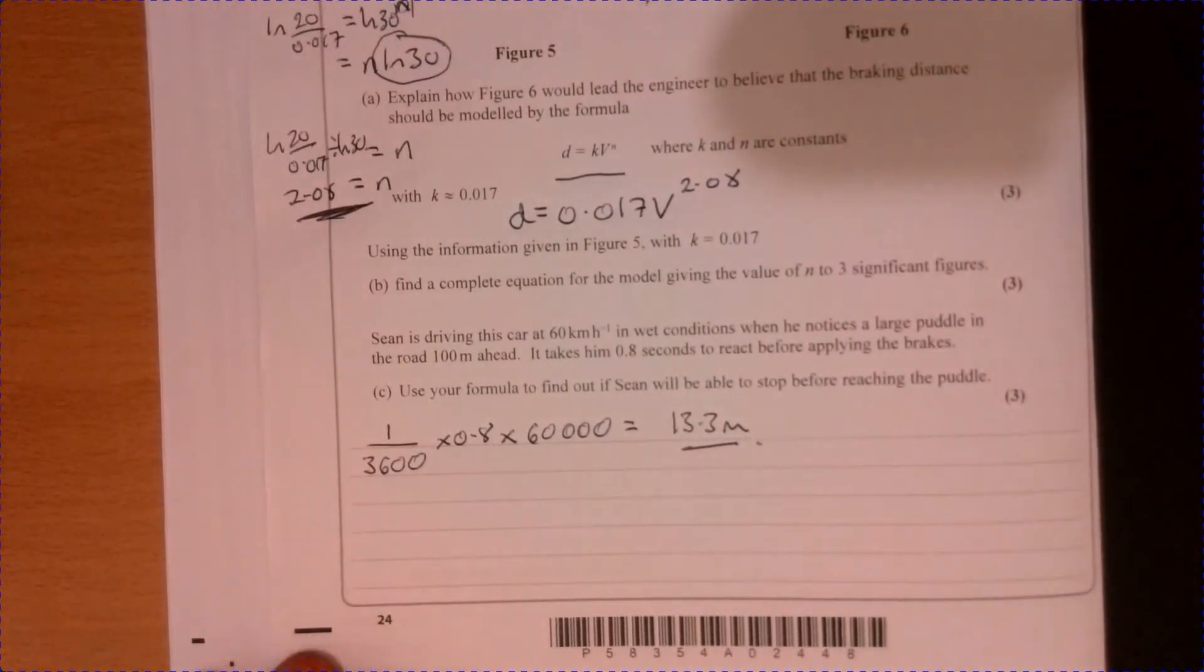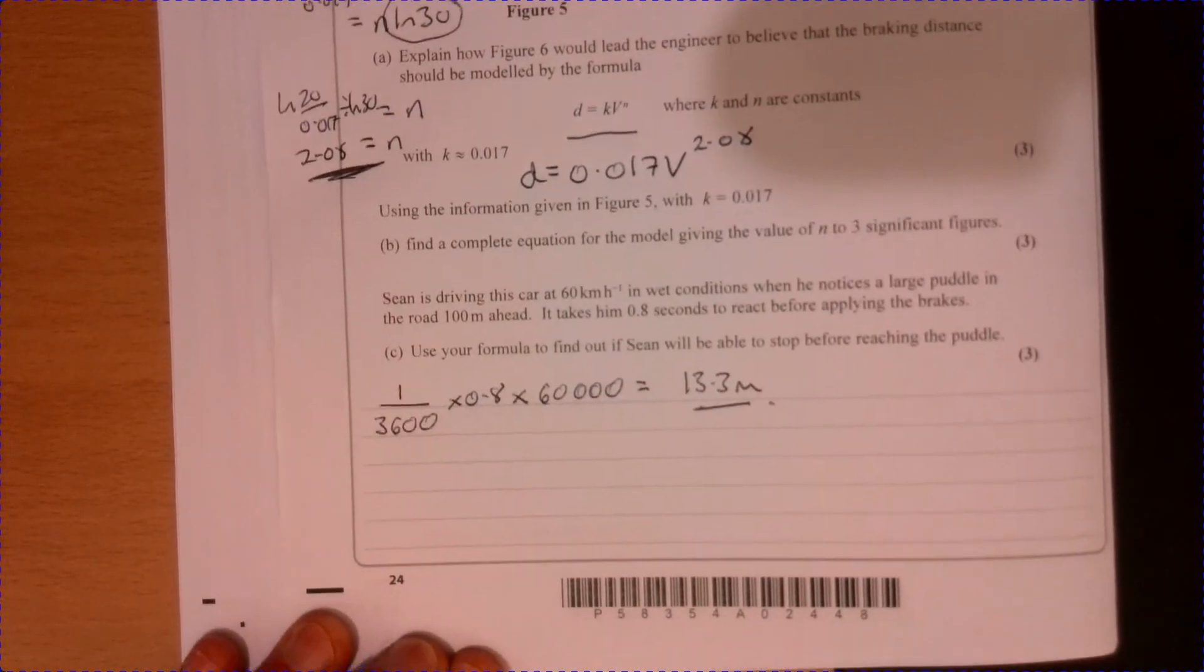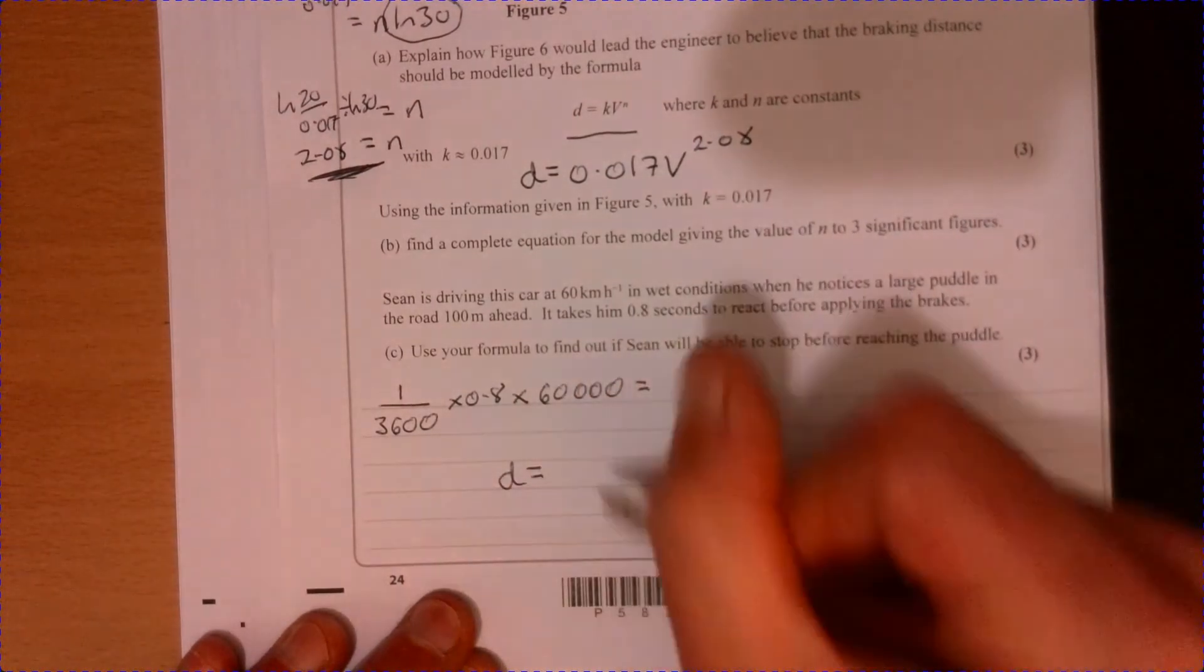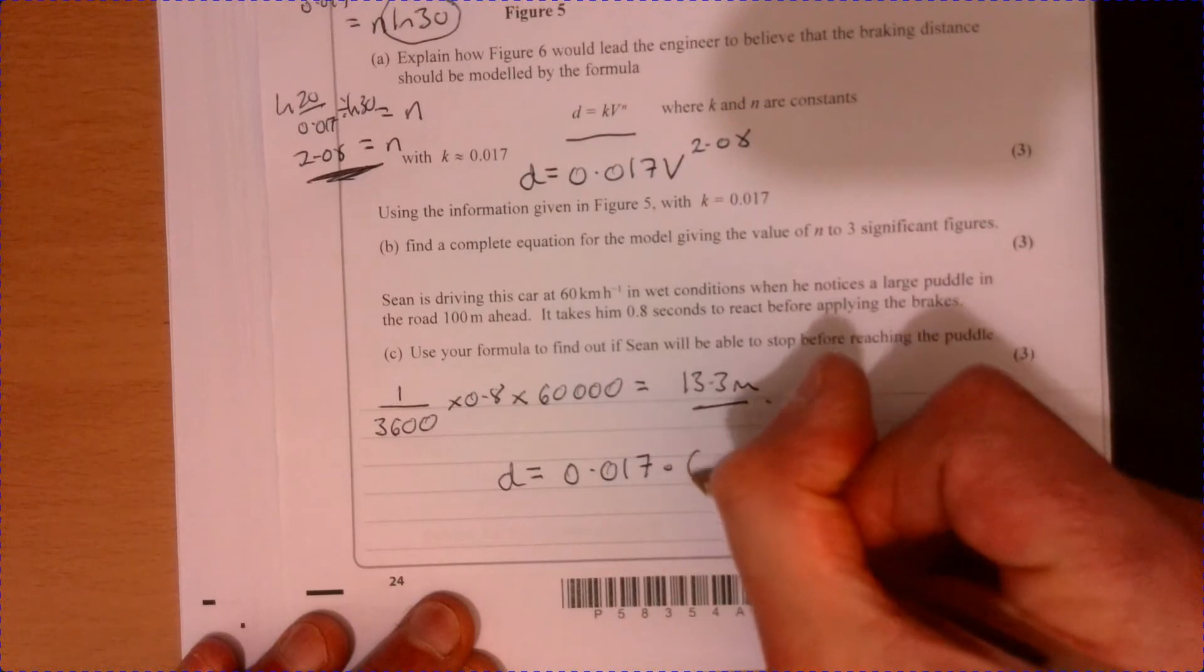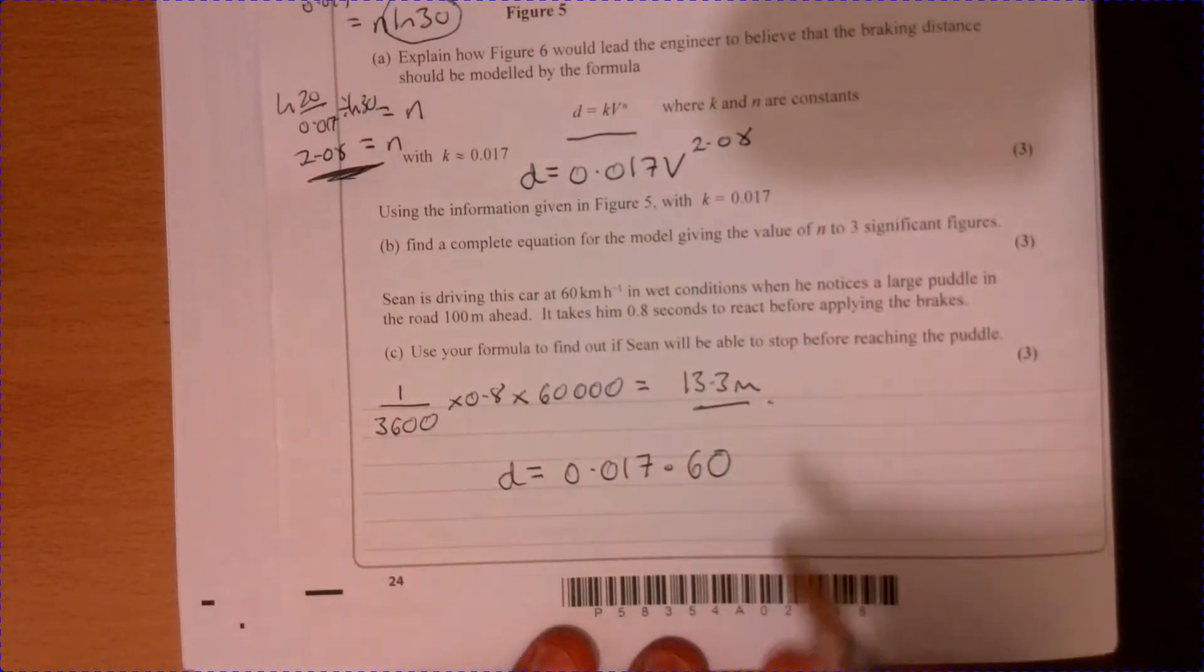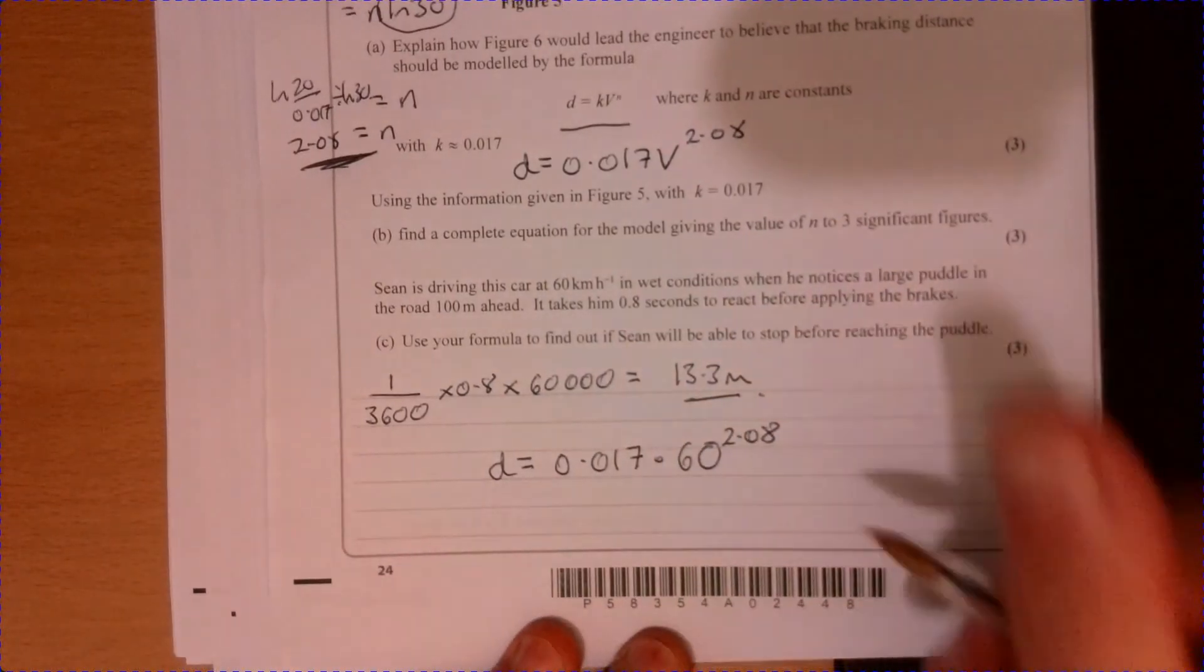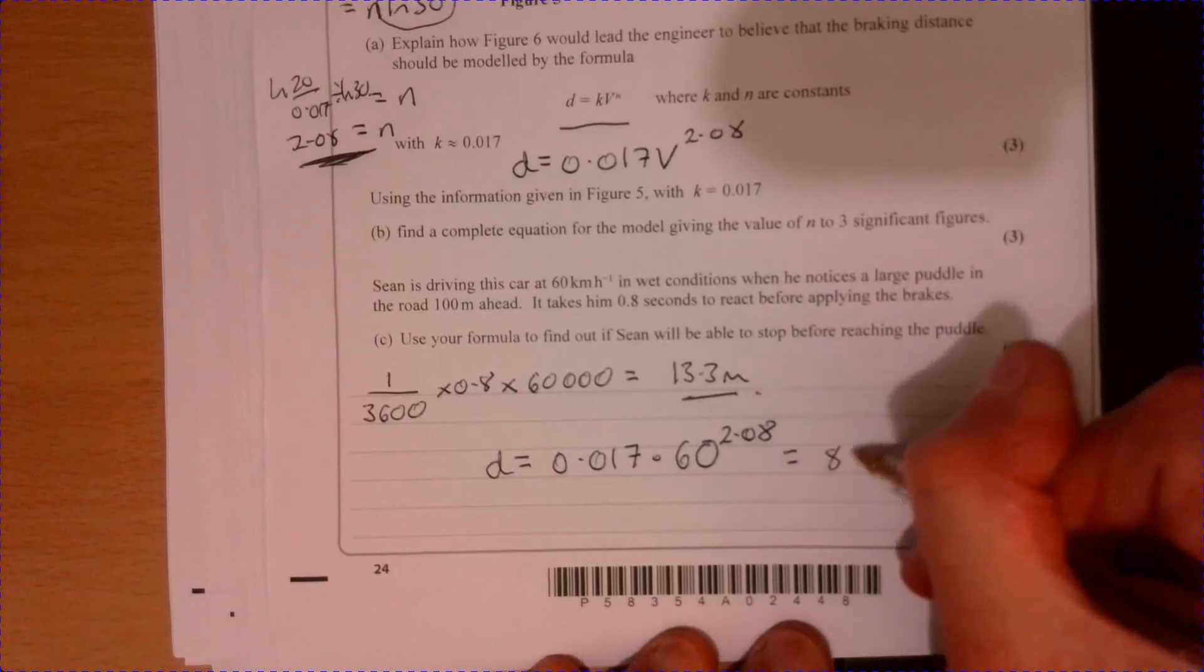Now how long is it going to take to slow down? What's the distance? Well, the distance will equal 0.017, we're traveling at 60, that's the velocity, the initial velocity, to the power of 2.08. If you work that out, that gives you 84.92 meters.